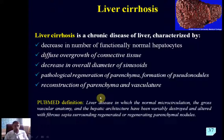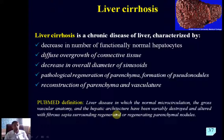The definition given by PubMed is also within the same context. It shows that cirrhosis is a liver disease in which the normal microcirculation, the gross vascular anatomy, and hepatic architecture have been variably destroyed and altered with fibrotic septa surrounding regenerated or regenerating parenchymal nodules. After both definitions, it is important to keep in mind that it is not just damage to the hepatocytes, but that impaired blood flow within the liver plays a very important role.